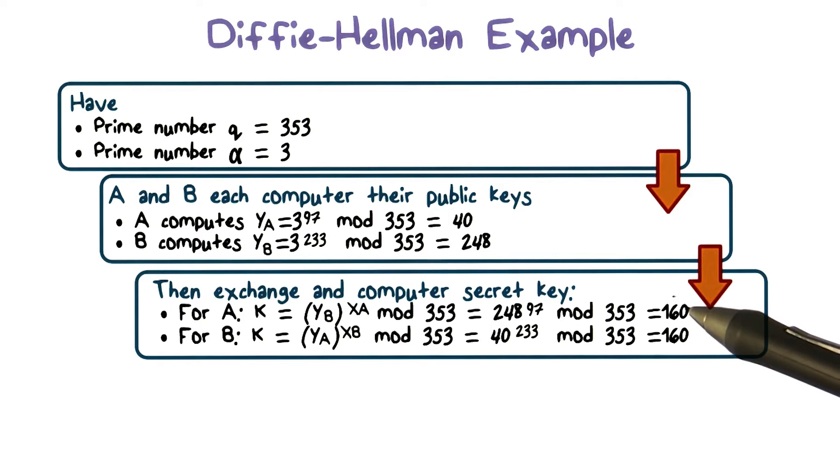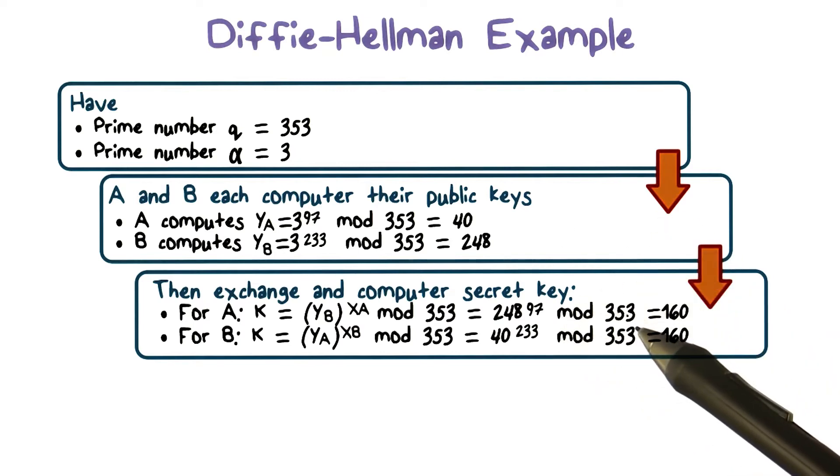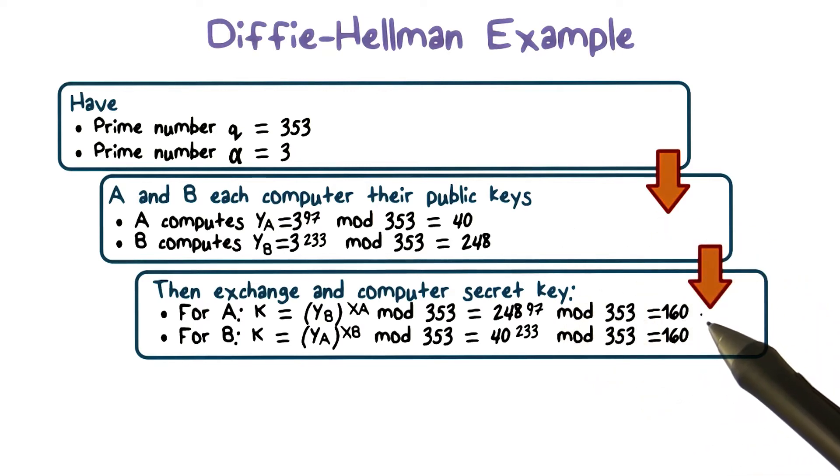Then user A computes the following: yB raised to the power of xA mod q. In this case, it would be 248 raised to the power of 97 mod 353, and the result is 160.